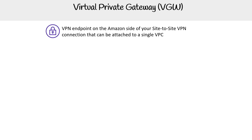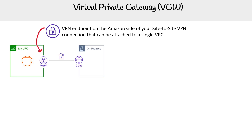Let's talk about the virtual private gateway component, which is important when you're setting up a site-to-site VPN. It is a VPN endpoint on the Amazon side, and it can be attached to a single VPC, as you can see here.